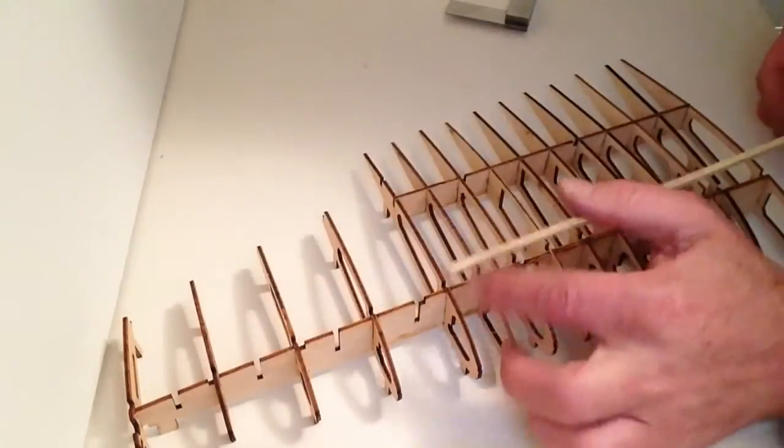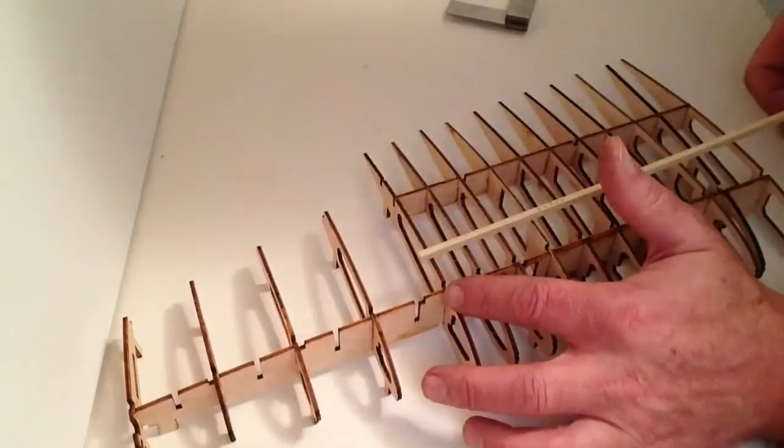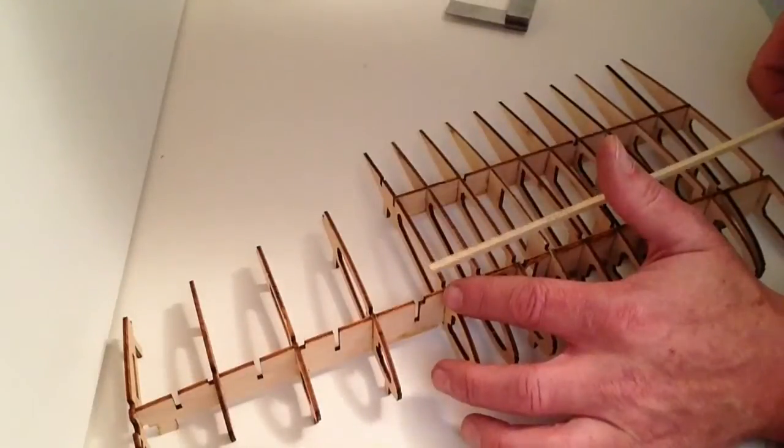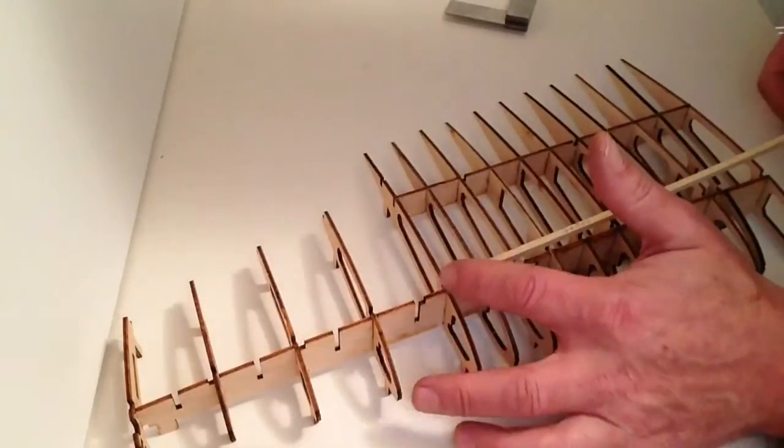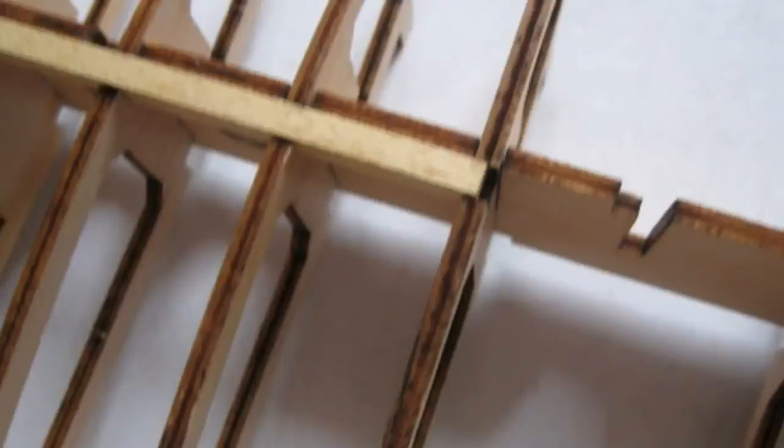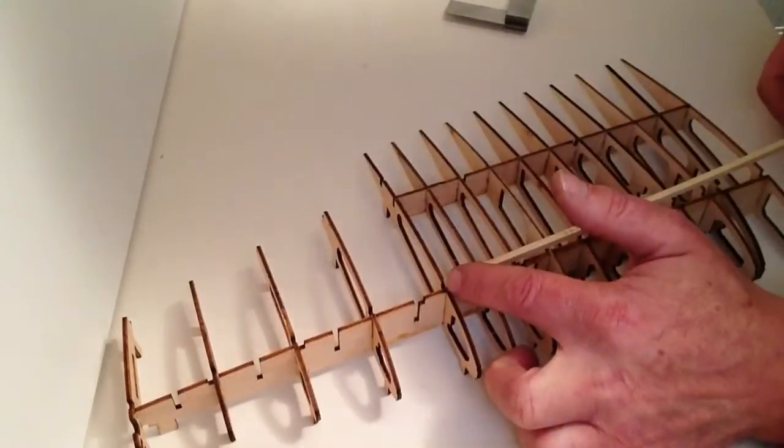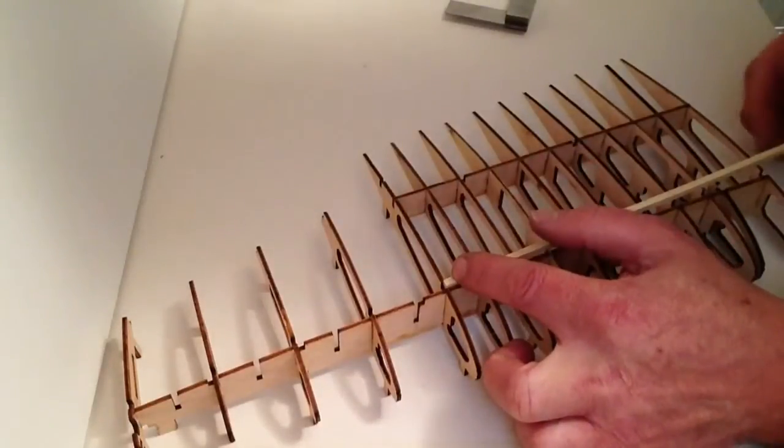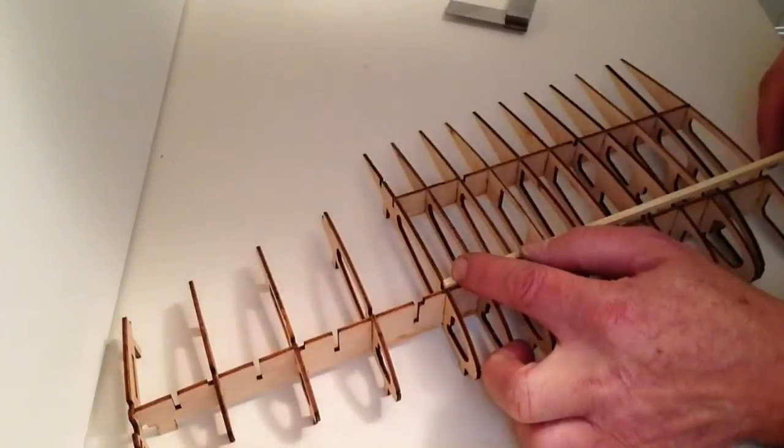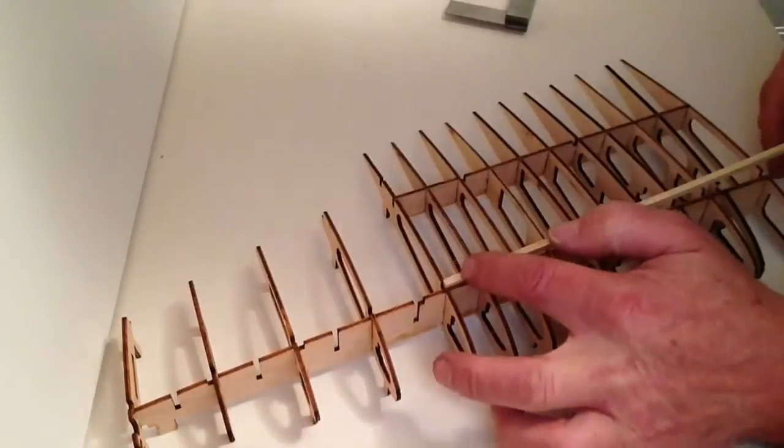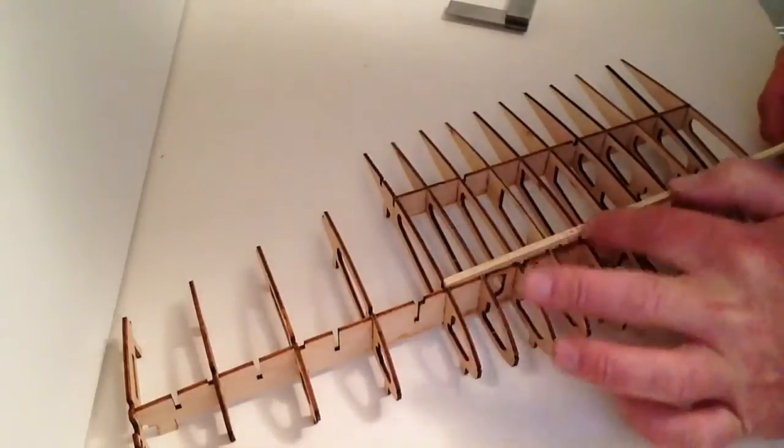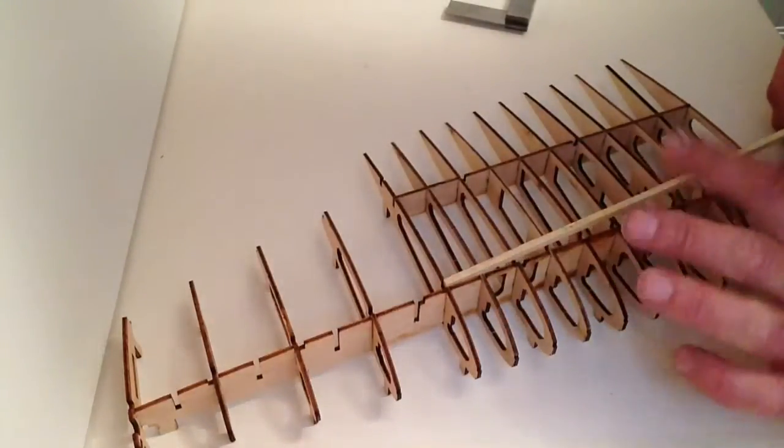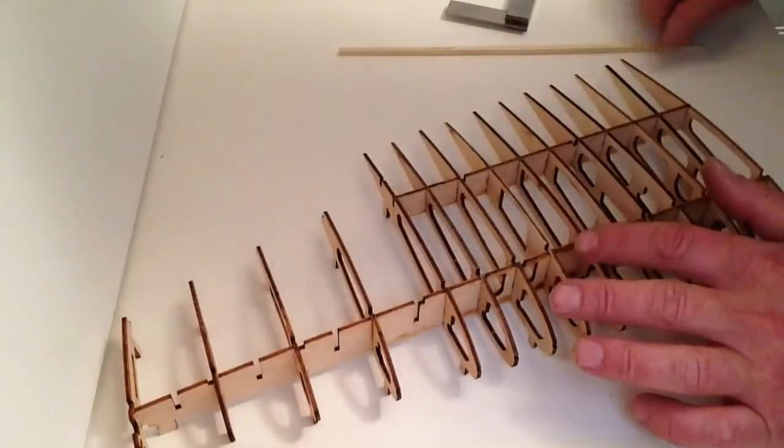From wing rib 6, we need to make sure this end sits just halfway on the rib. Don't worry about what's overhanging at the other end at the moment. We need to apply glue to all these sections down here and then push this rib into position.